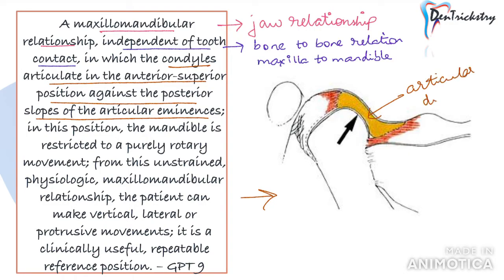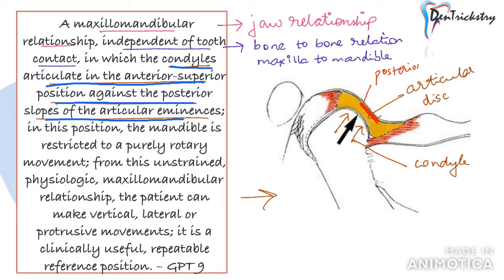The next part of the definition mentions the relation of your condyle with the articular disc, in which the condyles articulate in the anterior superior position against the posterior slopes of the articular eminences. This is the anatomical reference which we can understand with the help of this diagram. This is the articular disc, your condyle and the articular eminence. So your condyle is in an anterior superior position against the posterior slope of the articular eminence.